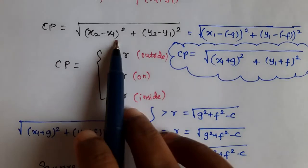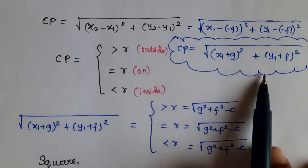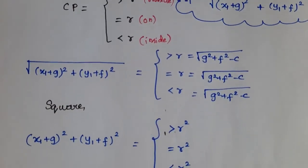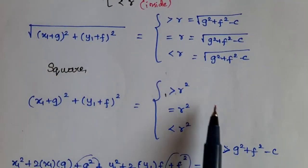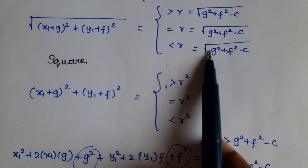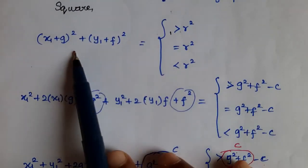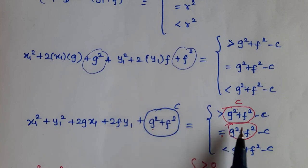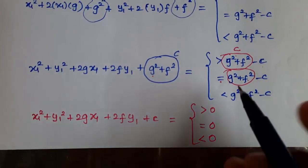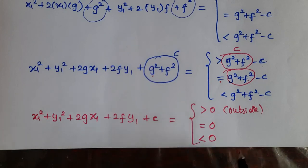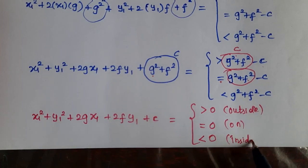So comparing the CP distance with the radius: if the distance is greater than r, the point is outside the circle (value > 0); if equal to r, the point is on the circle (value = 0); if less than r, the point is inside the circle (value < 0). This completes the proof.